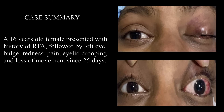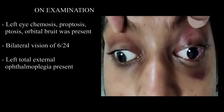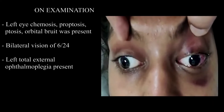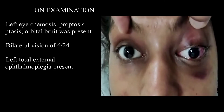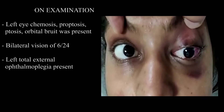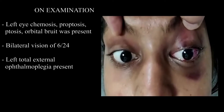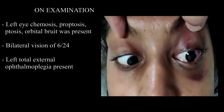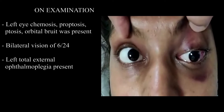A 16-year-old female presented with history of road traffic accident followed by left eye bulge, redness, pain, eyelid drooping, and loss of movement since 25 days. On examination, left-sided chemosis, proptosis, ptosis, and orbital bruit were present. Left-sided third, fourth, and sixth nerve palsy with total external ophthalmoplegia was present, along with bilateral vision of 6/24.